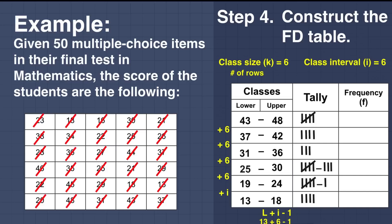Now we can have the frequency. For the first class we have 5 respondents. For the next one, we have 4. The next one, we have 3. The next one, we have 8. The next one, we have 6. And the last class, we have 4. If we add the frequencies, we arrive at the total number of participants or respondents: n is equal to 30.